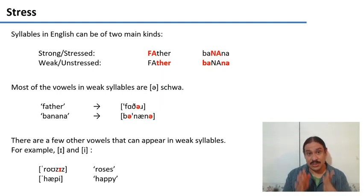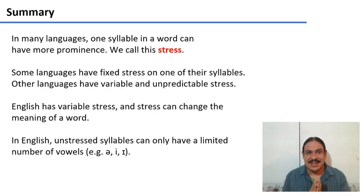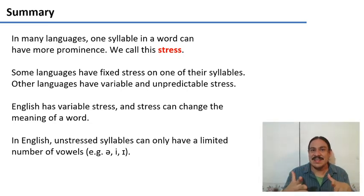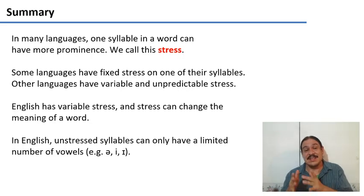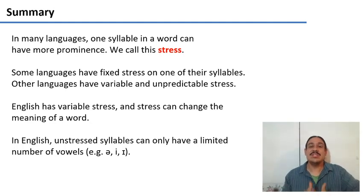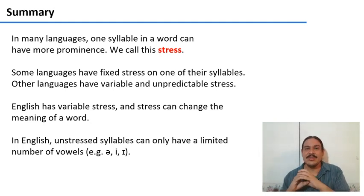We'll look at more details when we study phonological rules. But in summary: in many languages there's a syllable in the word that has more prominence than the others — this is called stress. It's not a single phonetic thing but a bundle of phenomena like volume and length. Some languages have fixed stress; in others stress is variable and unpredictable, like Spanish or Russian. English has variable stress, stress can change word meaning, and unstressed syllables are much more likely to have the vowel schwa.